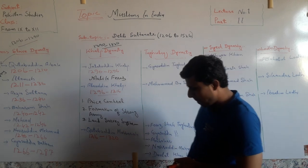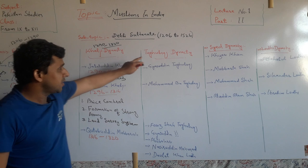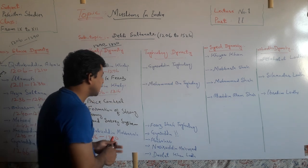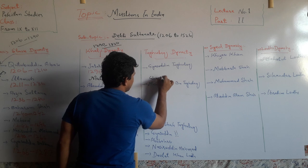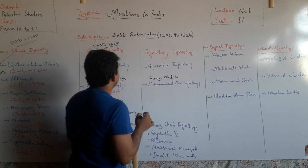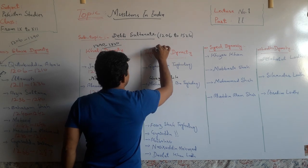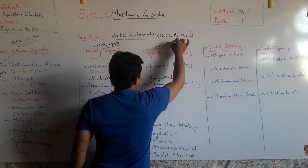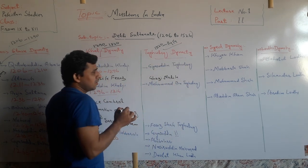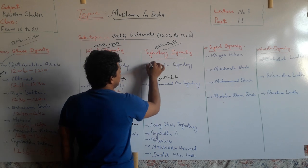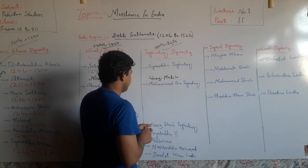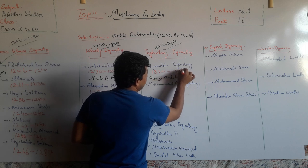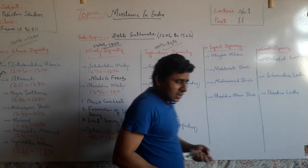After the Khilji dynasty, the Tughlaq dynasty was founded by Giyasuddin Tughlaq, whose real name was Ghazi Malik. The dynasty lasted from 1320 to 1414. Giyasuddin Tughlaq became the ruler from 1320 to 1325.